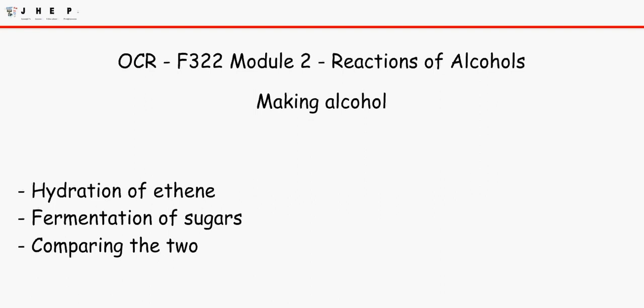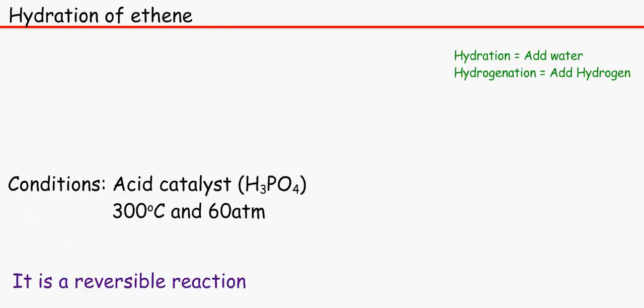So the first thing is hydration of ethene. If you remember from our other video, we hydrated ethene to make ethanol. But here's the more specific reaction. We have C2H4 because remember ethene is CnH2n, and then we add water into it as a gas or steam.